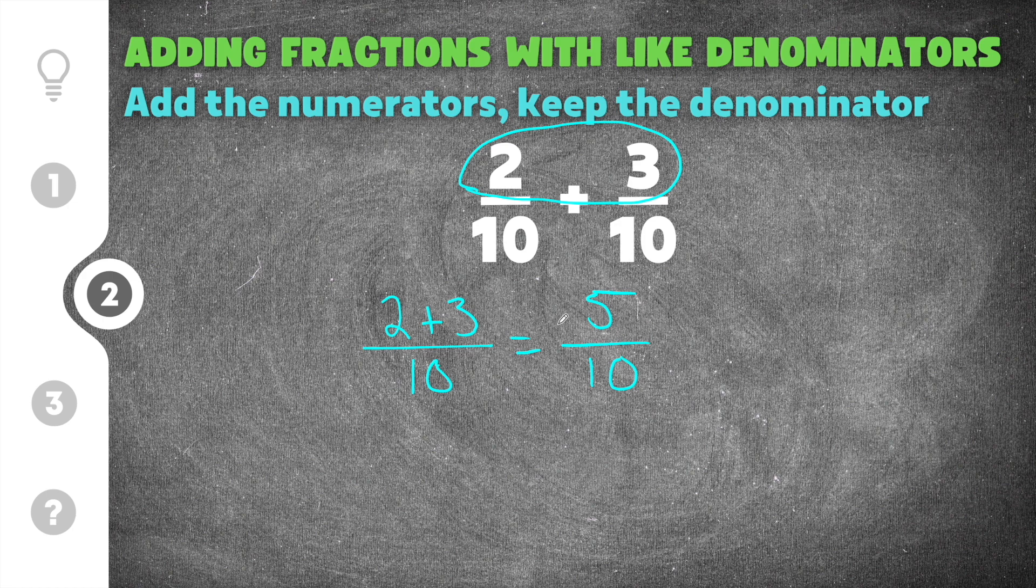Now the last step is to check to see if we can reduce it. In this case five tenths does reduce both by five. So five goes into five which is the numerator and five also goes into ten which is the denominator. When you reduce this, five divided by five is one and then ten divided by five is two. So our final solution is going to be one half.